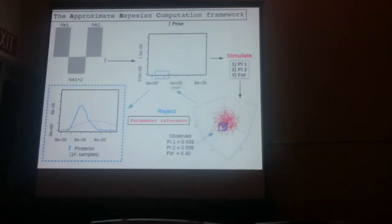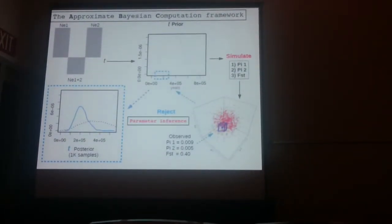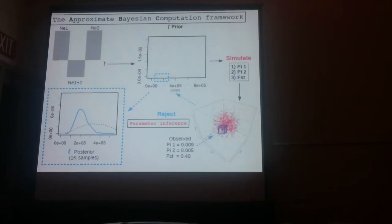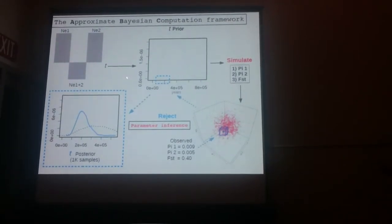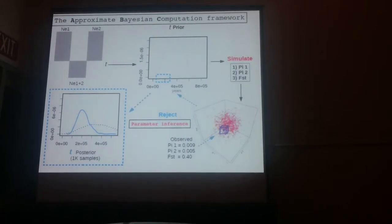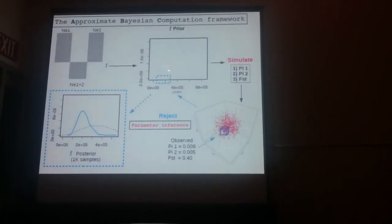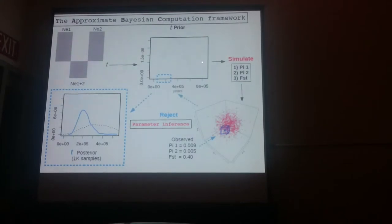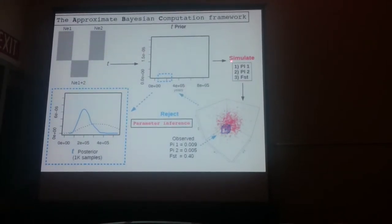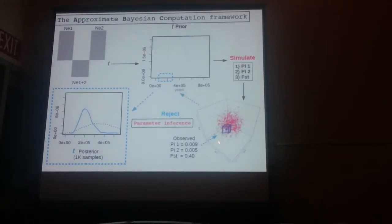The ABC approach is very simple. You can use it to estimate divergence times, for example. You simulate a population model based on some prior knowledge that you have of divergence time. You simulate sampling from this prior, simulate summary stats, and those summary stats give you a cloud of points.